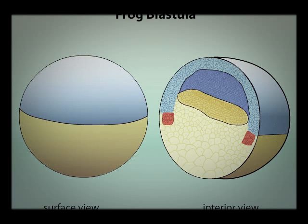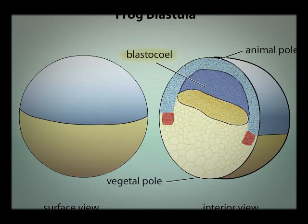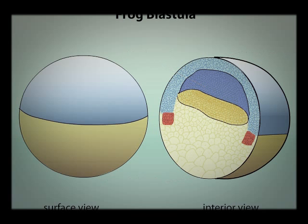If we look at a cross-section of an embryo of the frog Xenopus, we can see that at this point it is a ball of cells with a fluid-filled cavity. The cavity is the blastocoel and the embryo is currently in the blastula stage of development. A blastula contains large yolk-filled cells at the vegetal pole and smaller cells at the animal pole. The three colors represent the three tissue layers that become defined early in embryogenesis: yellow indicates endoderm, red indicates mesoderm, and blue indicates ectoderm.